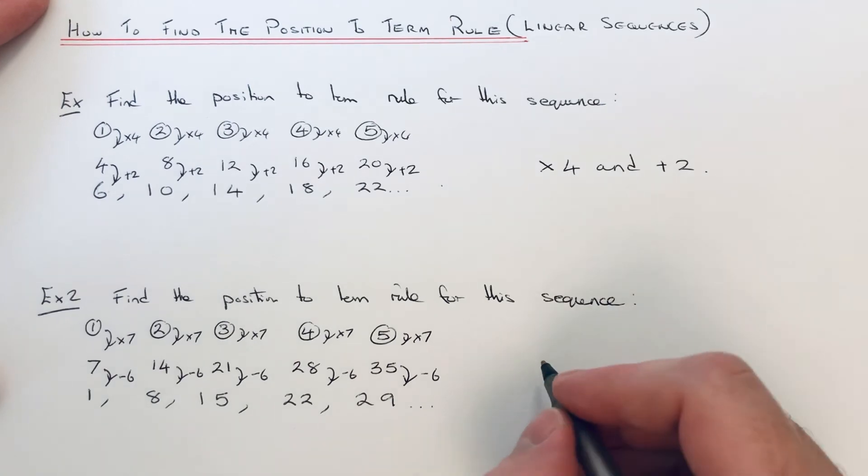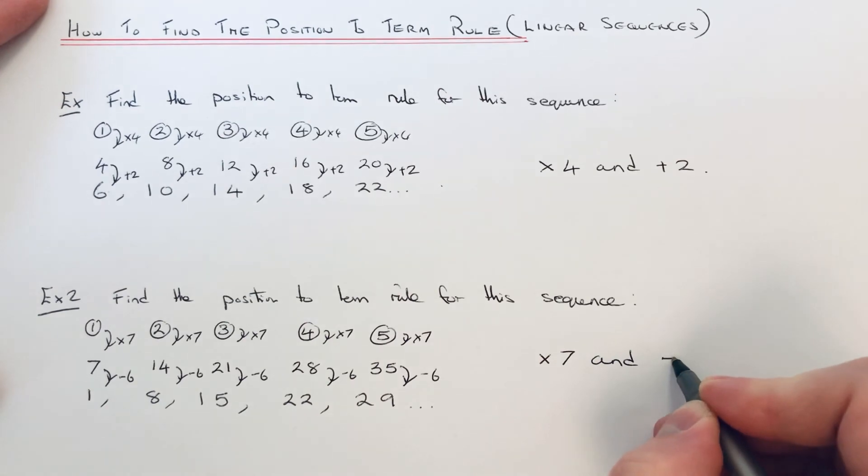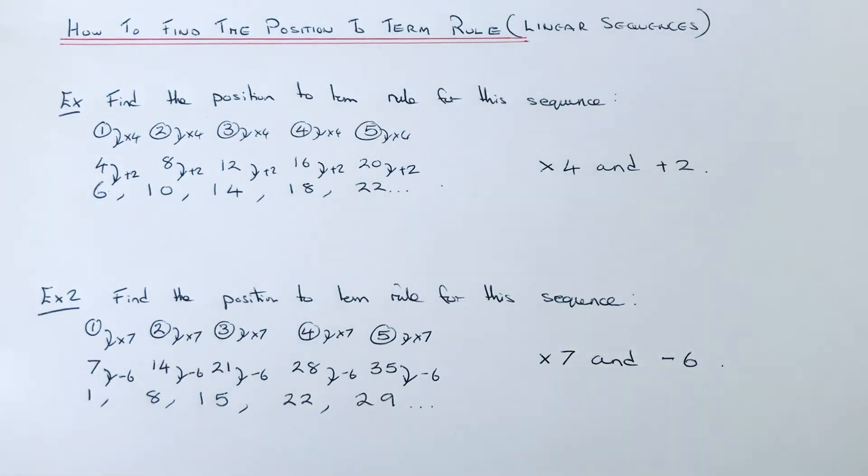So our position-to-term rule for this sequence is to times the position number by 7 and then subtract 6. I hope you liked this video. If you did, make sure you like and subscribe. Thanks for watching guys, bye bye!